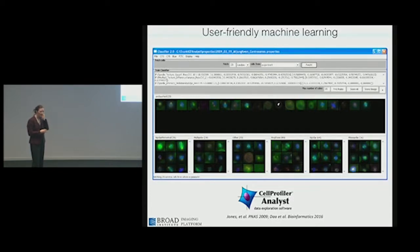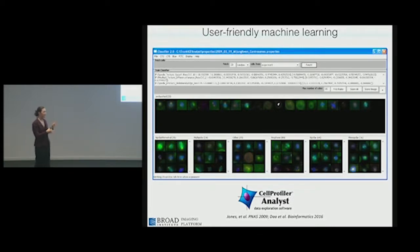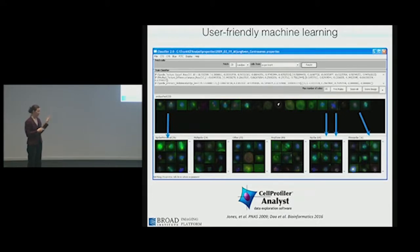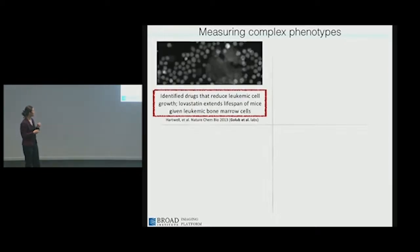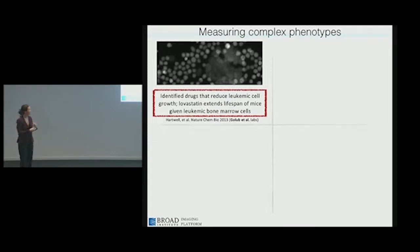What we're most proud of is that this general tool requires very little tweaking from one complicated phenotype to another. You sit down in front of the computer for anywhere from an hour to maybe an entire day for a super difficult phenotype. At the end of the day, you have a system that can score your phenotype usually as well as you can. Some projects using this have allowed us to interrogate more complex cellular systems.